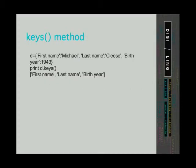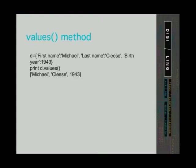Another method we can call on dictionaries is the keys method. It returns a list where elements of the list are keys found in the dictionary, as seen on the slide. The values method returns a list where elements of the list are values found in the dictionary.